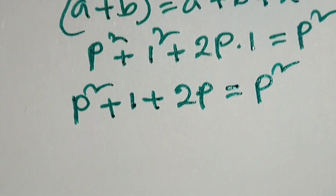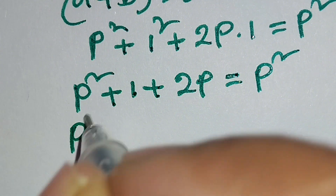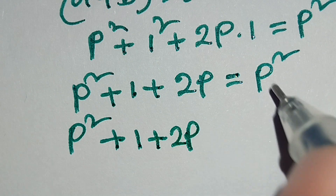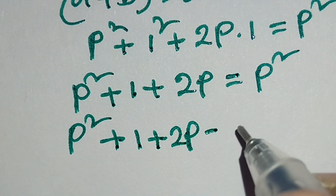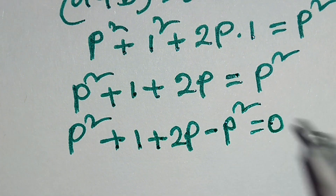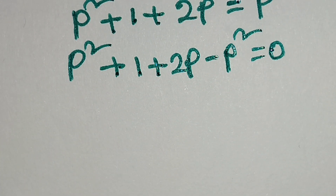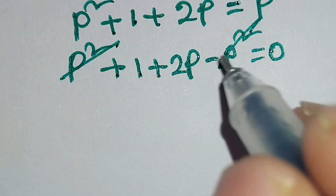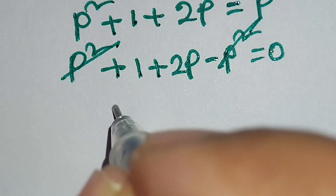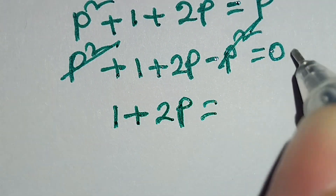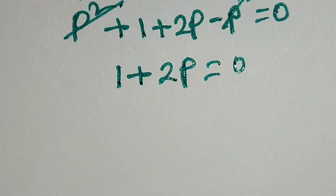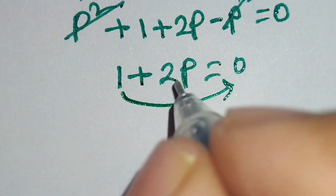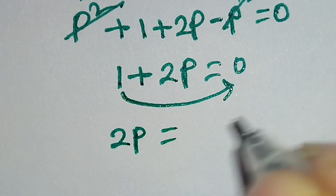p squared plus 1 plus 2p — this p squared we can write as minus p squared is equal to 0. Here, this p squared and this p squared cancel out because of the plus and minus signs. So 1 plus 2p is equal to 0.